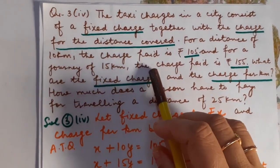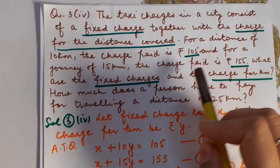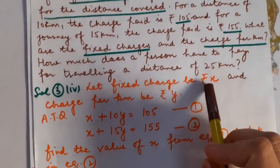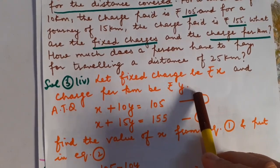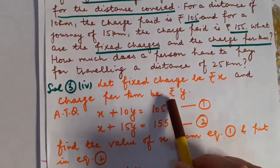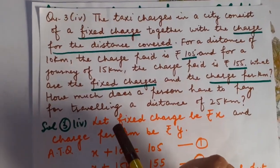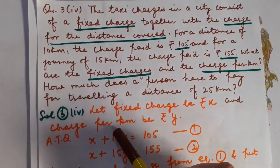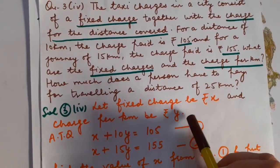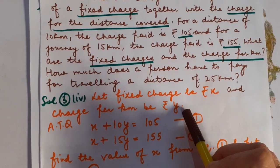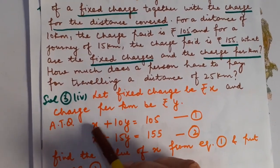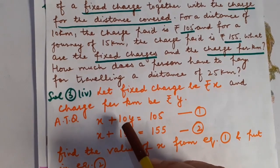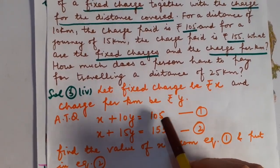Here, children, whenever a journey happens, the passenger will have to pay a fixed charge. So, let the fixed charge be Rs. X and the charge per km be Rs. Y. These are the two charges we have to calculate. For a distance of 10 km, the per-km charge is Rs. Y, so for 10 km I pay Rs. 10Y. According to the question, fixed charge plus distance charge gives X plus 10Y = 105.